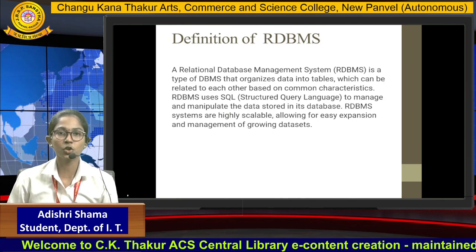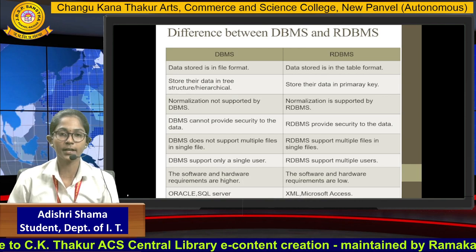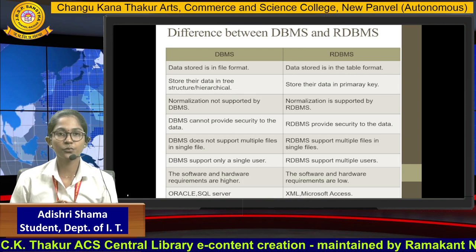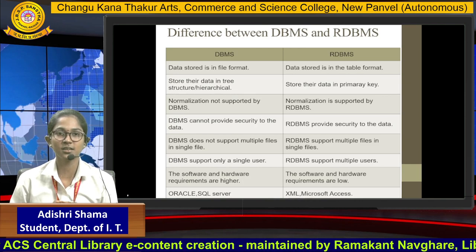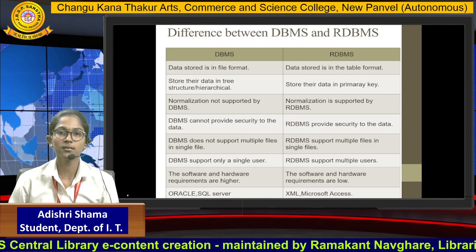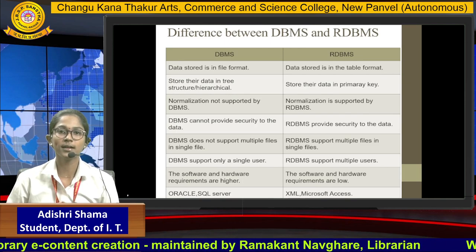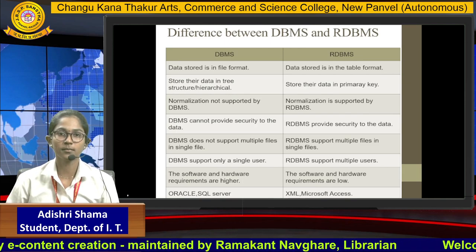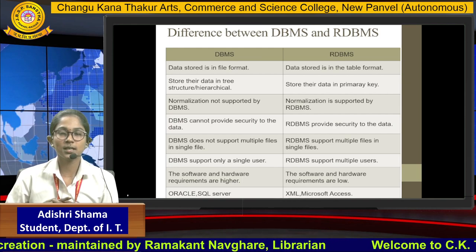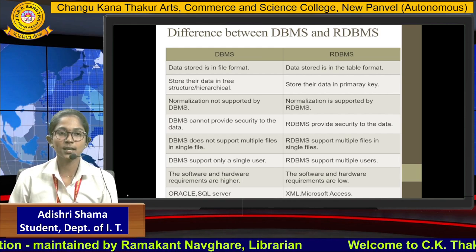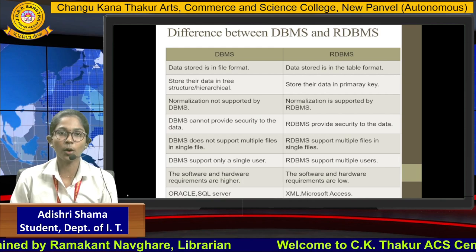The difference between DBMS and RDBMS: first, in DBMS data is stored in file format; in RDBMS data is stored in table format. Second, in DBMS data is stored in a tree structure or hierarchical form.